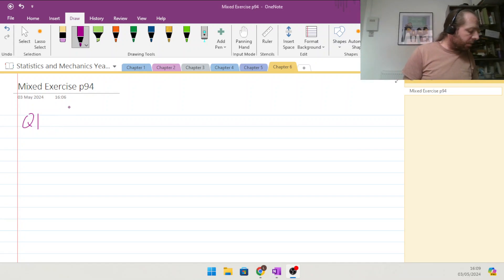Question 1 of the mixed exercise on statistics and distribution from the Statistics and Mechanics book year 1. So question 1 says the random variable x has a probability function of probability x, x equals x over 21. And then they tell us that x is equal to 1, 2, 3, 4, 5, and 6.